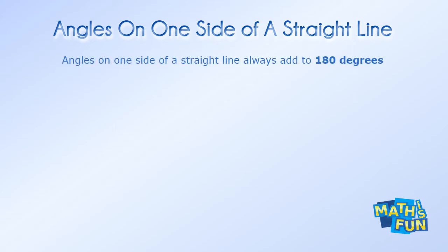Angles on one side of a straight line always add to 180 degrees. 30 degrees plus 150 degrees equals 180 degrees.